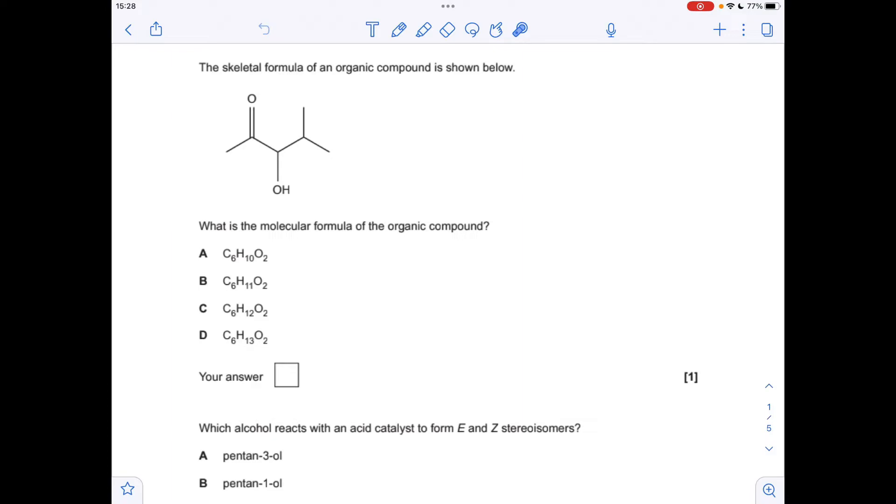Okay, so make a start with the multiple choice questions. All of the options have got six carbons and two oxygen, so it's down to the number of hydrogens. We've got three hydrogens here, one there, one there, three there, one there, three there, so the total is 12. The answer is C.